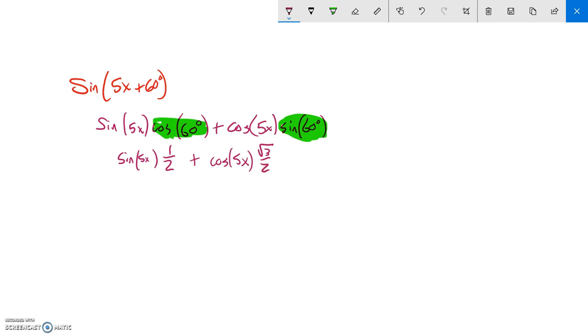Notice these are multiplied together. Sine 5x times one half. So I'm going to rewrite it so the number's in front, you know, like it's a coefficient. One half sine 5x plus root 3 over 2 cosine 5x. And there it is. All expanded.